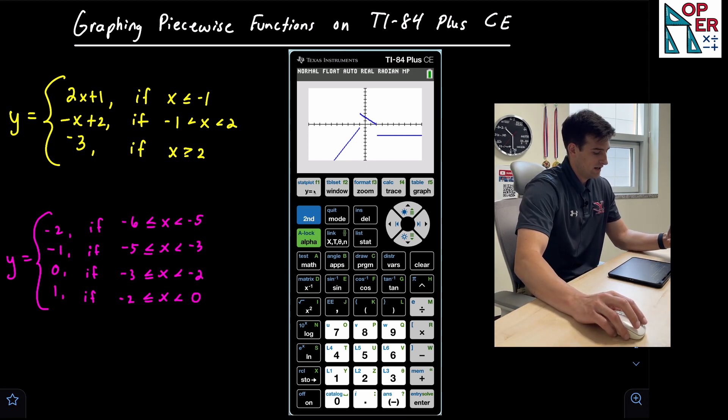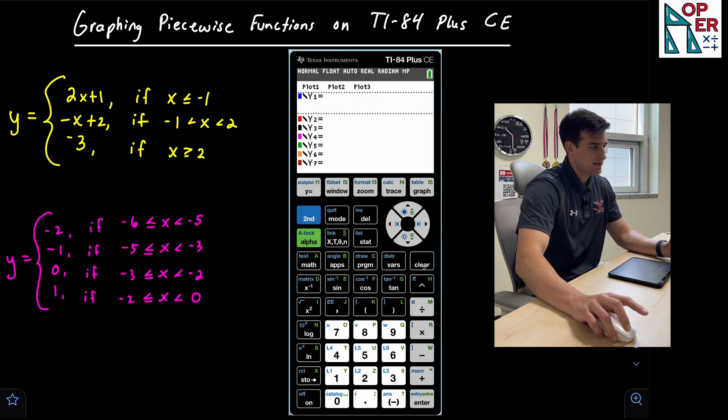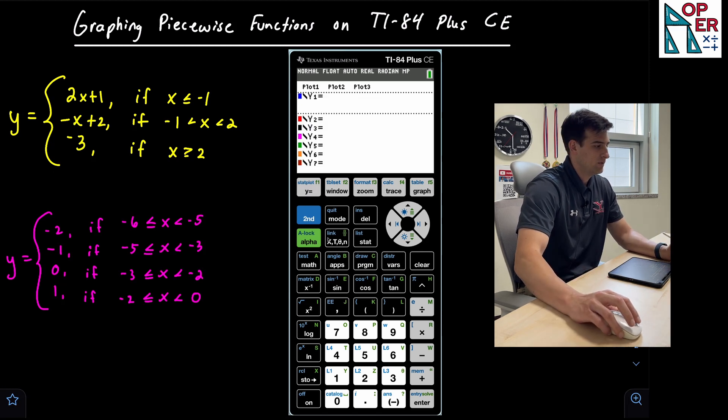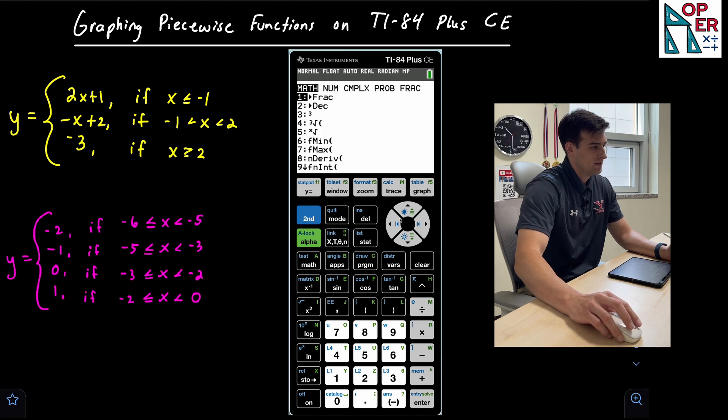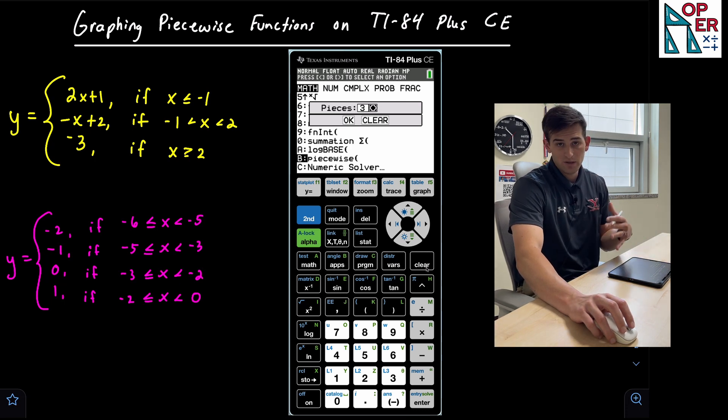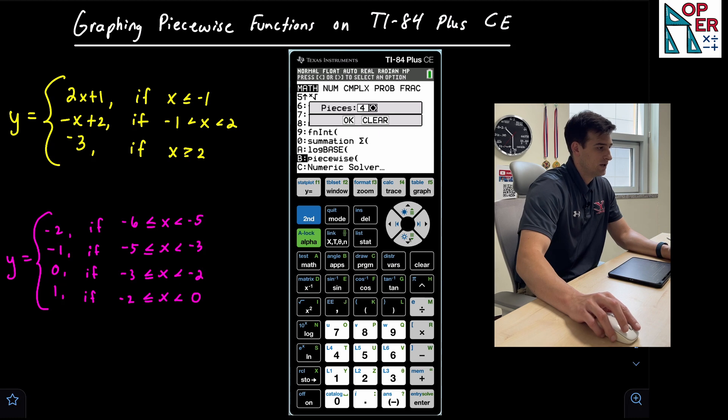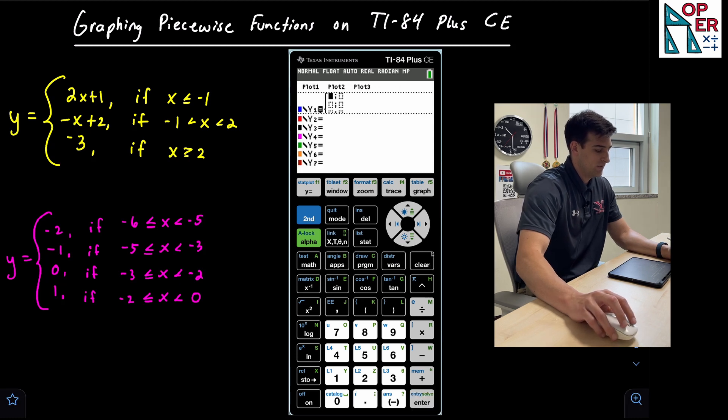Now if we wanna go back and graph the step function, let's go back to Y equals, and we can clear this out and it takes it all away. And now once again, we can go back to math, go up, and go to option B, which is piecewise. And now notice that my second example here in pink has four pieces. So I'm gonna use the right arrow to change that to four, go down and hit okay, and now we have four pieces.